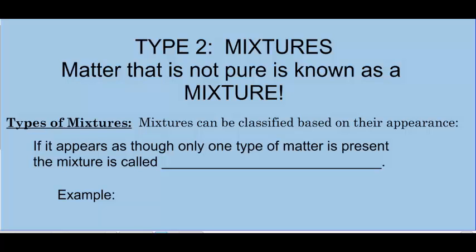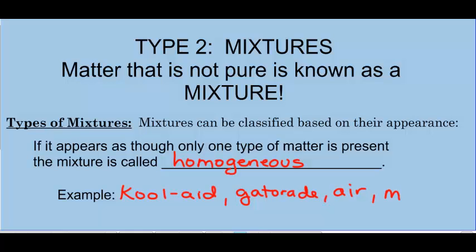Mixtures are matter that is not pure, and they're really classified based on their appearance. If it appears, if it looks, that only one type of matter is present, the mixture is called homogeneous. An example of a homogeneous mixture might be like Kool-Aid, or Gatorade, or Powerade. Air is a homogeneous mixture. Milk.